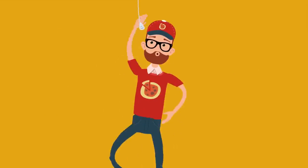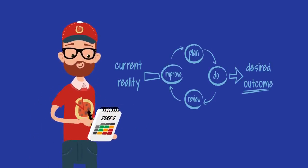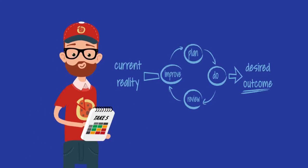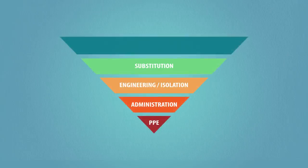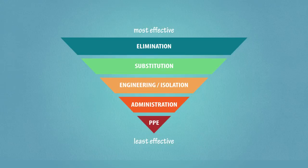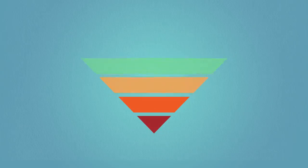Plan and implement controls to eliminate or reduce risks before you proceed with your task. Some types of controls are more effective than others. Use the hierarchy of controls to choose the best method.